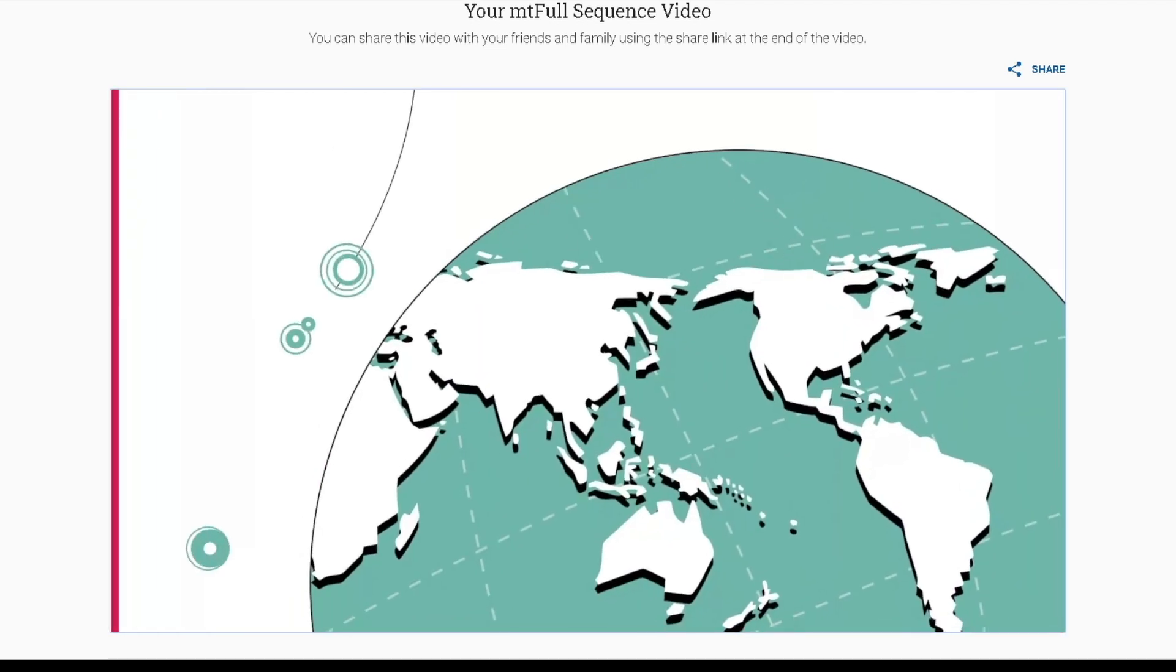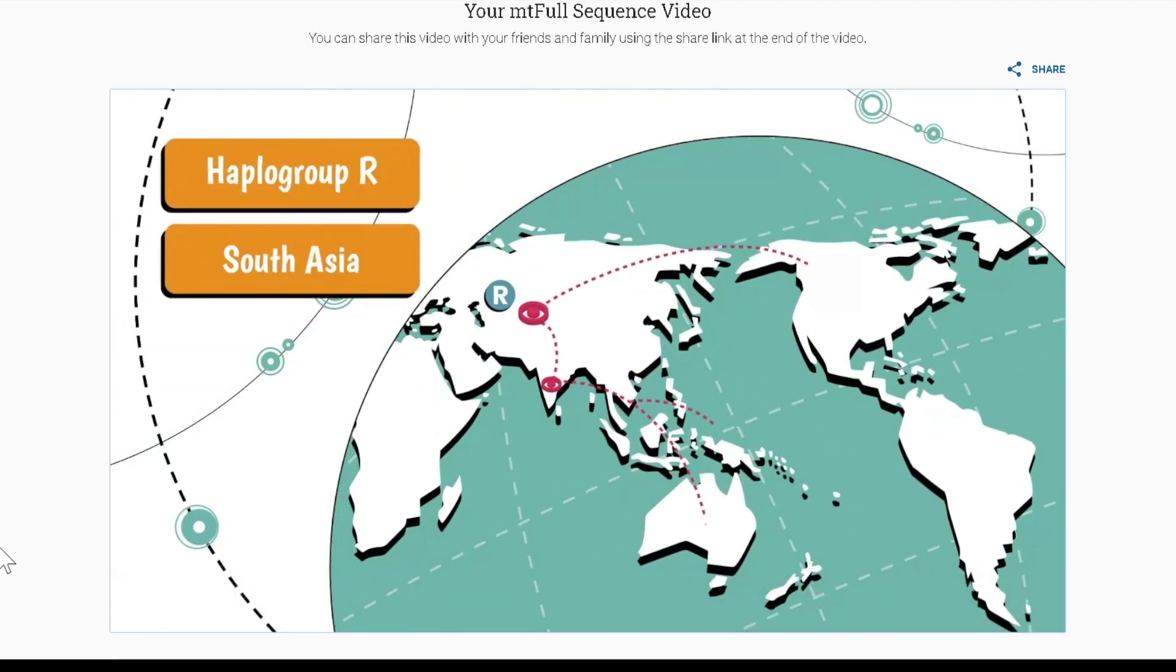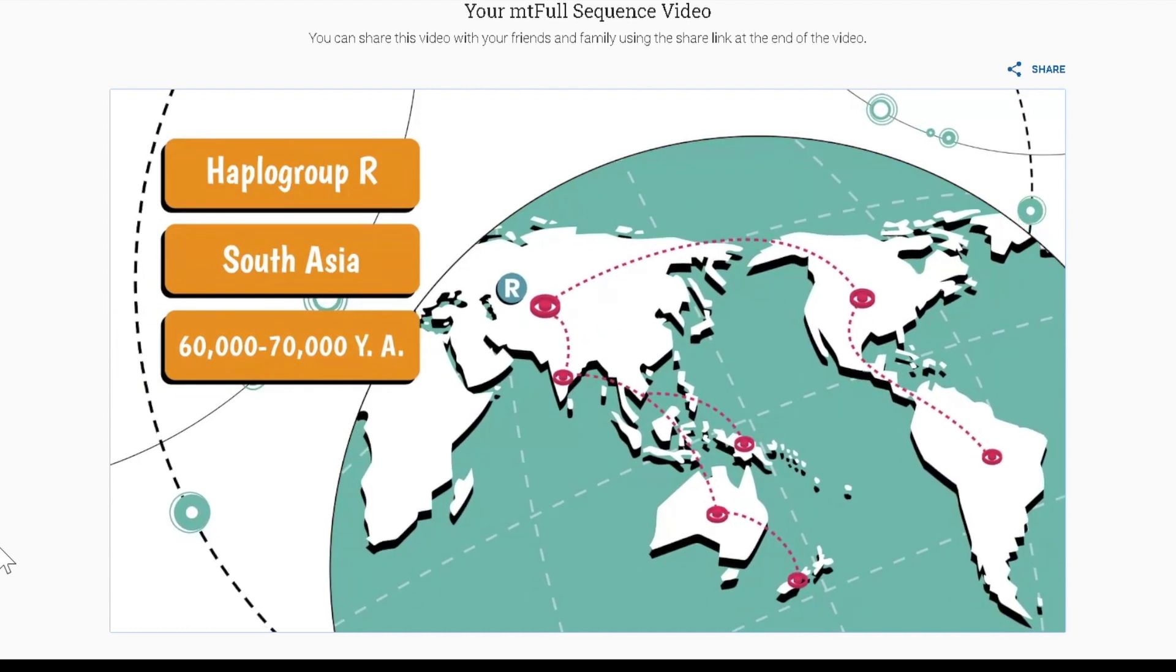You belong to the maternal haplogroup branch R. Haplogroup R is believed to have originated in South Asia 60,000 to 70,000 years ago. It first expanded to the Indian subcontinent, followed by spread to Eurasia, Australia, and America.